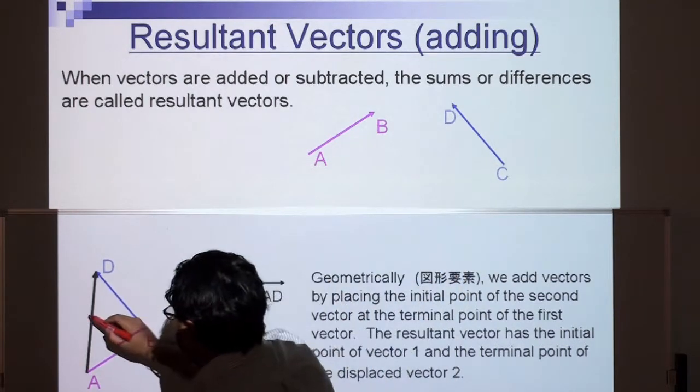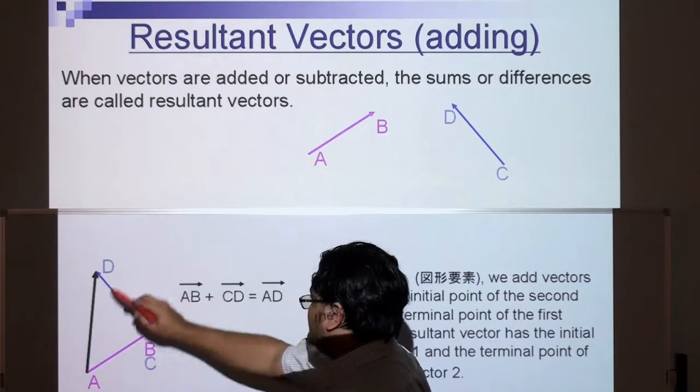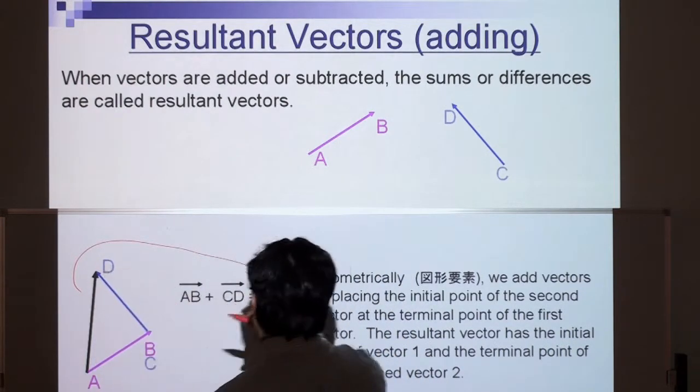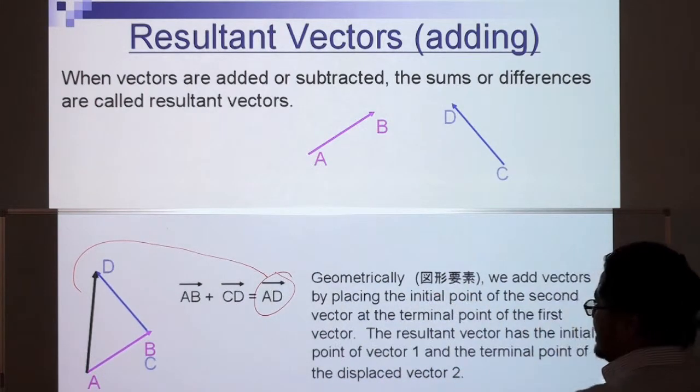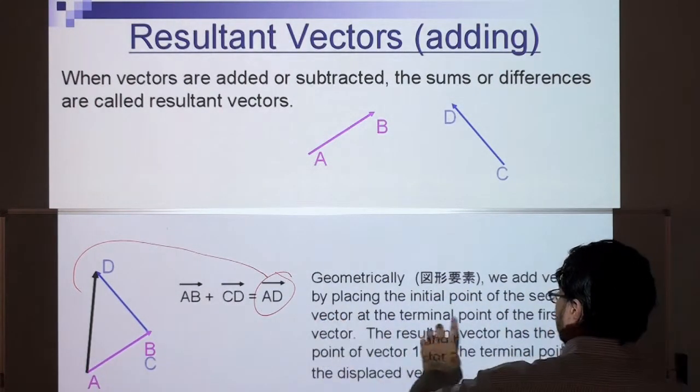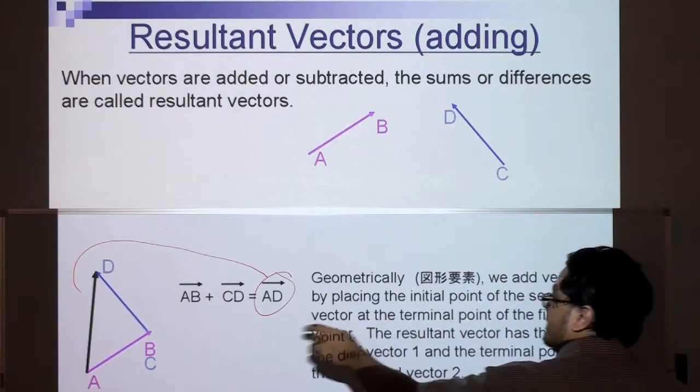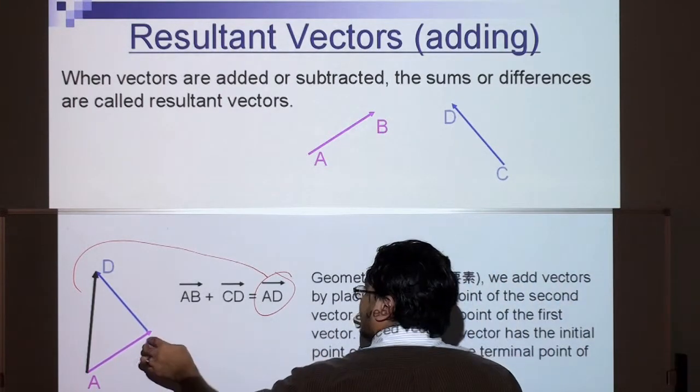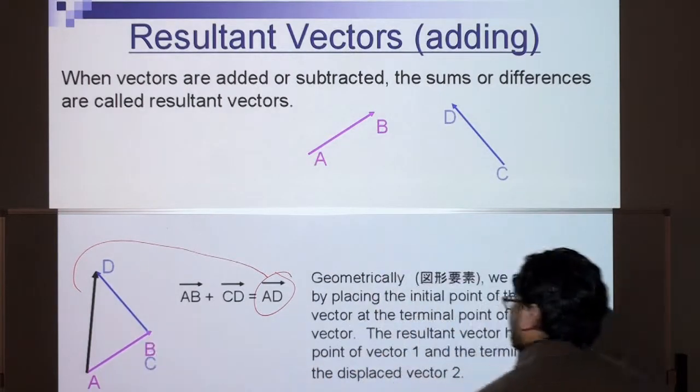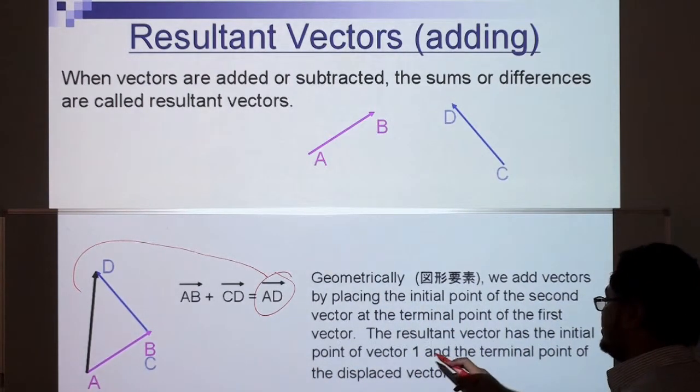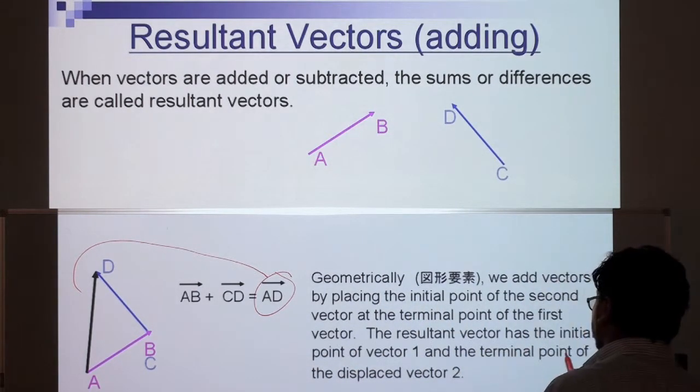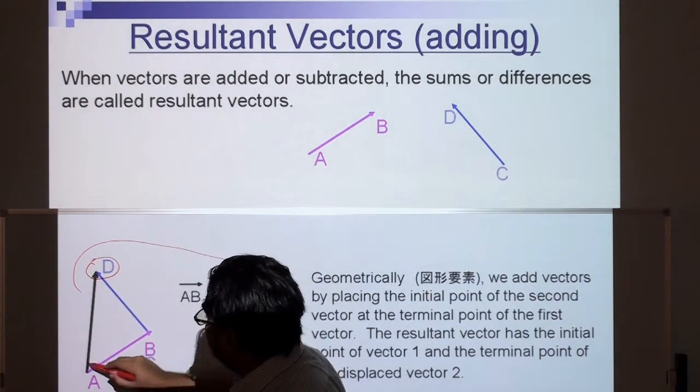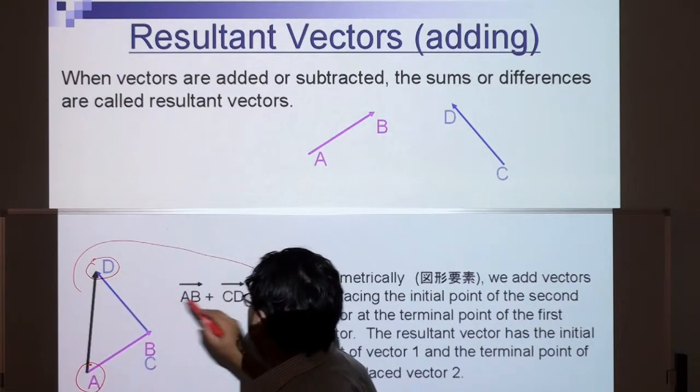So you just put them together and then you get the resultant vector here, and this resultant vector is AD, A to D. Geometrically we have added vectors by placing the initial point of the second vector at the terminal point of the first vector. The resultant vector has the initial point of vector 1 and the terminal point of the displaced vector 2. So the end of vector 2, the beginning of vector 1, where we get AD.